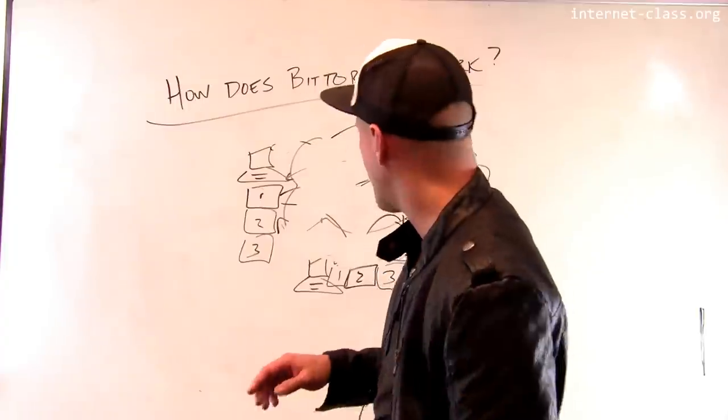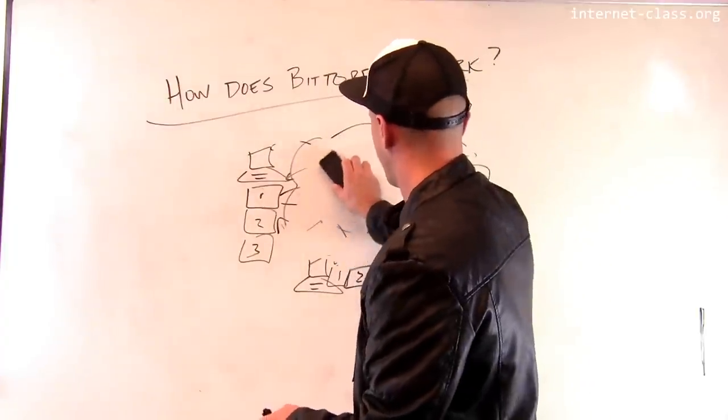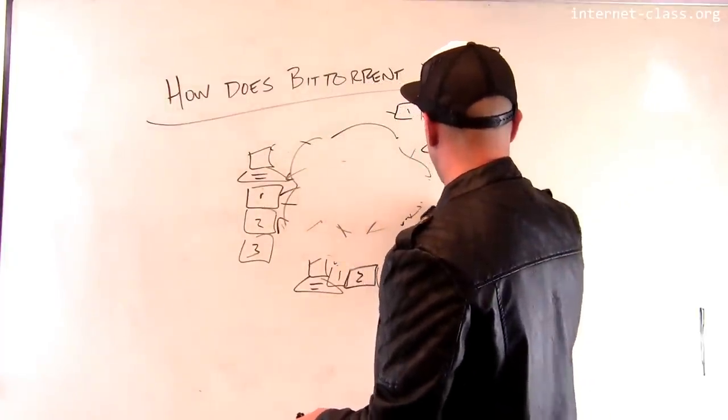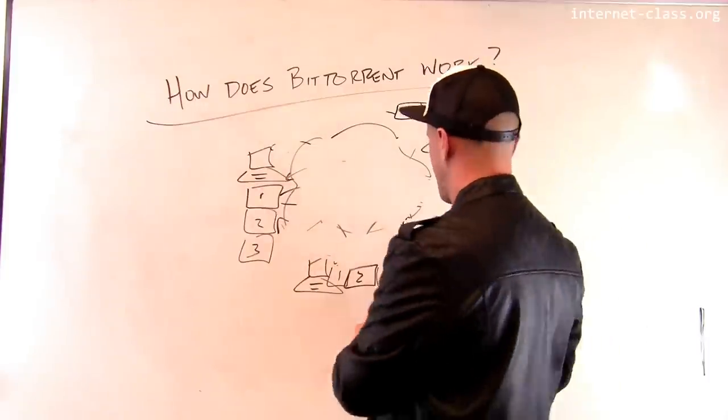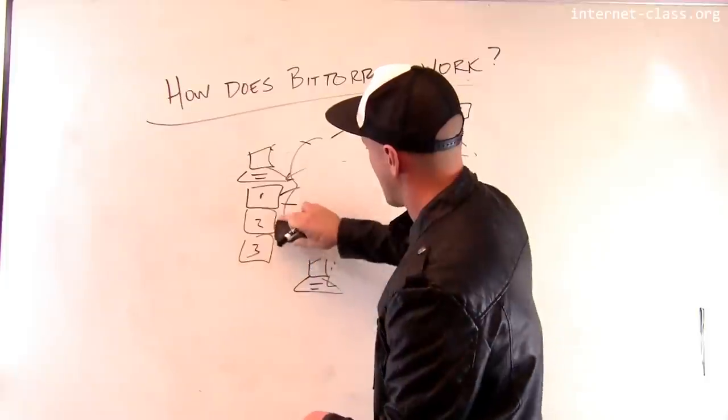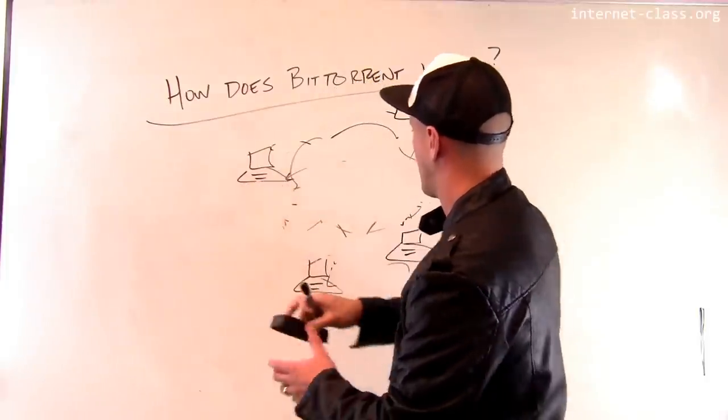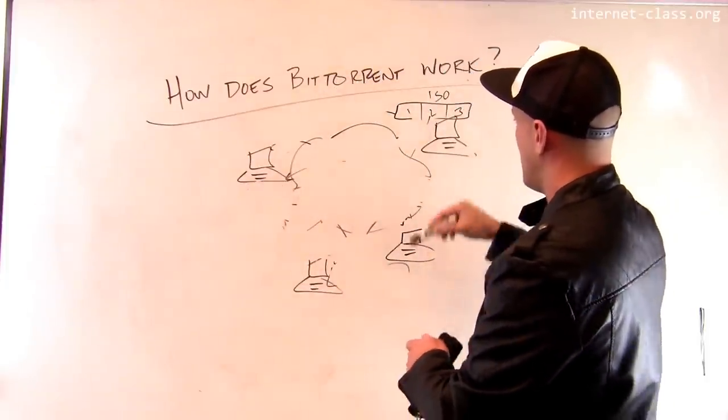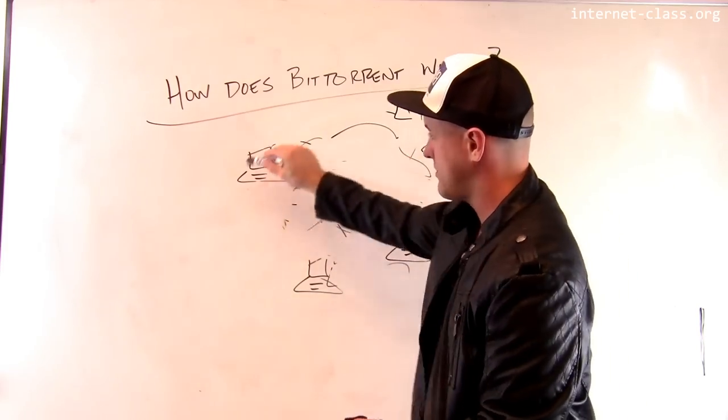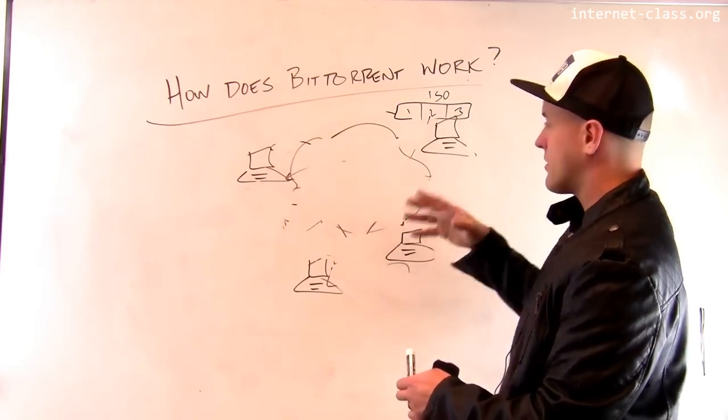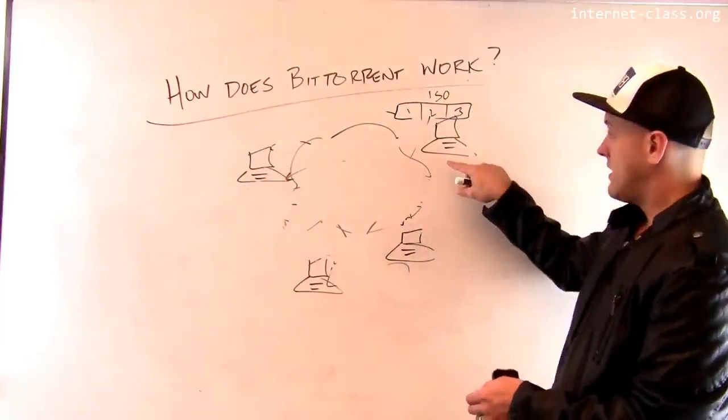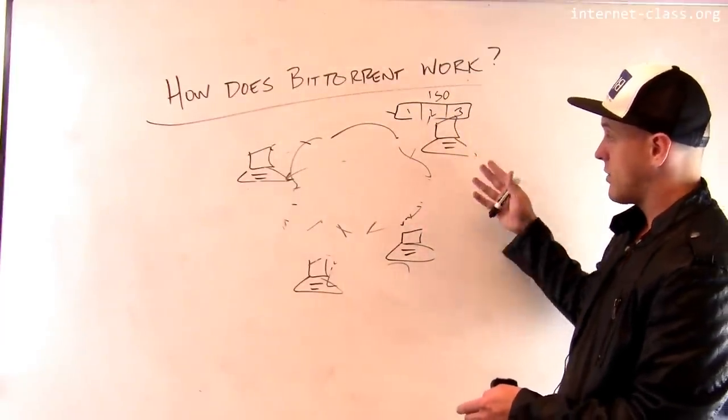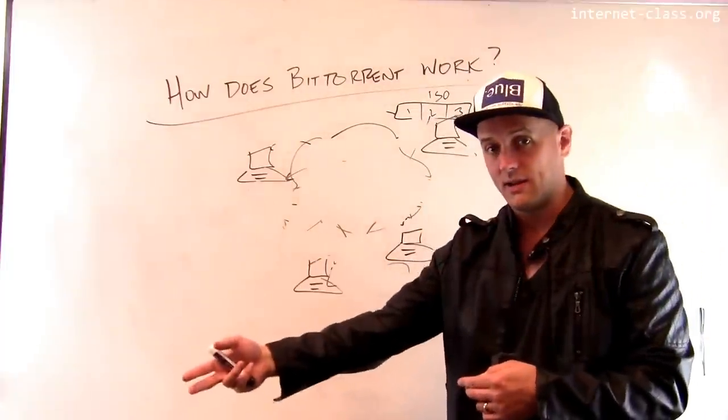And so when you're thinking about a peer-to-peer approach to distributing a file like this, one thing that can happen is that a single computer, if it has to, let's say that I have a computer here, and let's say that we're starting this process, right? We start over here. This guy has to distribute all these three chunks to the other computers in the network. If he's on a residential internet connection, which is frequently the case when you're using BitTorrent, this internet connection is going to be quite slow because he's uploading data to the other clients.